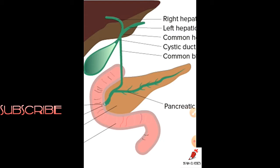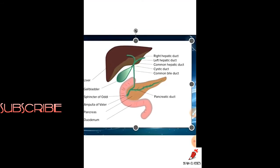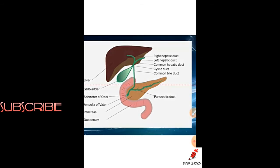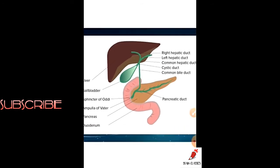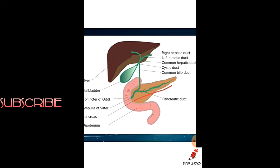These cells secrete insulin, glucagon, and somatostatin hormones directly into the blood, which is why this is called the endocrine portion of the pancreatic gland. Now let's talk about the pancreatic duct and its relationship with the bile duct system. The pancreatic duct is directly connected to the bile duct system.